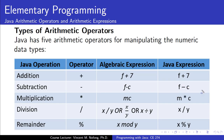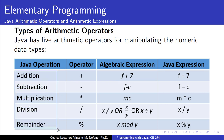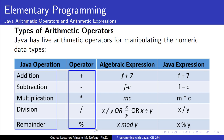Java supports five arithmetic operators that we can use in manipulating numeric data, which are addition, subtraction, multiplication, and division. Correspondingly, these are the symbols we can use if we want to find the addition, subtraction, multiplication, division, or the remainder of numeric values in Java.